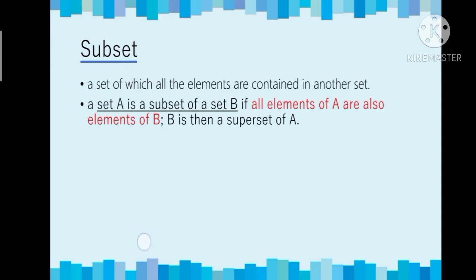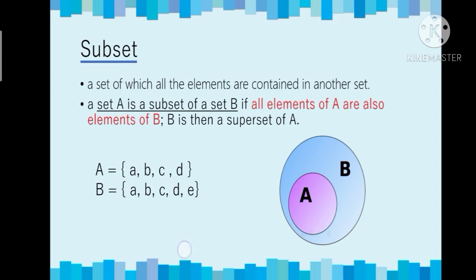If that happens, B is then a superset of A. To better understand it, we have an example: A has elements {a, b, c, d} and B has elements {a, b, c, d, e}. In a Venn diagram, you will notice that the elements of A are part of the elements of B. That is why we say B is a superset of A, and since all elements of A are also elements of B, we can say that A is a subset of B.